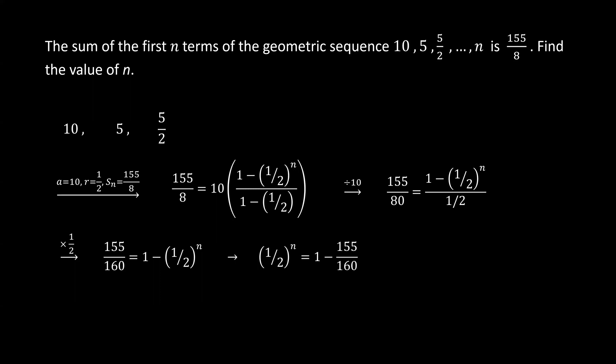Then we interchange the fraction on the left and the n term on the right to have all the numbers on the right-hand side. We combine both numbers on the right to get 5 over 160, which simplifies to 1 over 32.